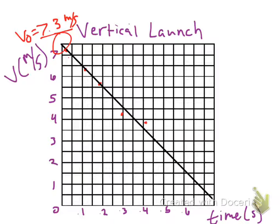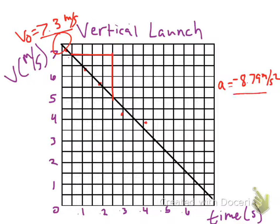The next question asks for acceleration. On a velocity versus time graph, you take two points on the line and find the rise over run. I plugged these points into my calculator and did a linear regression on the best fit line. The result was an acceleration of negative 8.79 meters per second squared — fairly close to 9.8, within 10%. The calculator also gave a vertical intercept of 7.26 meters per second.